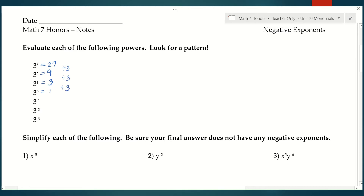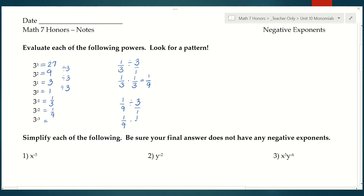My pattern here is divide by 3. Which means if I keep going with that pattern, 3 to the negative first would be 1 divided by 3, or 1 third. If I keep going, 1 third divided by 3 is really 1 third times the reciprocal, which is 1 ninth. And 3 to the negative third would be 1 ninth divided by 3, which is 1 over 27.